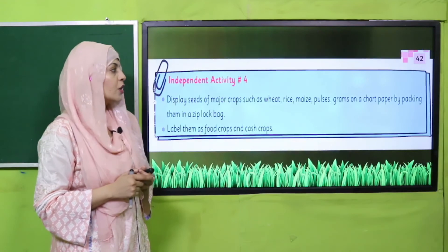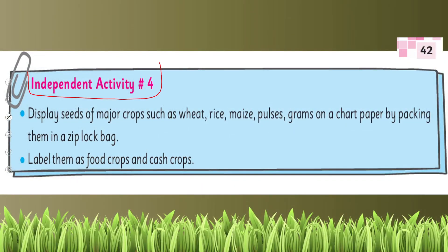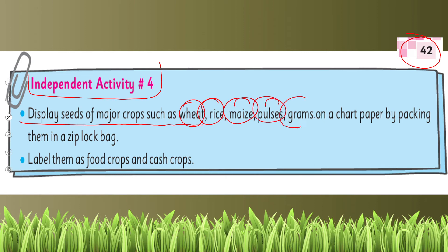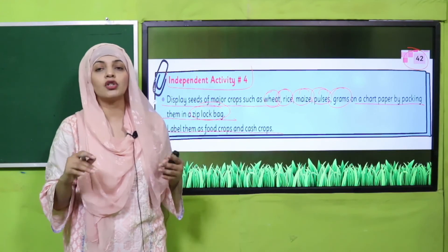So for homework you will do Active Independent Activity number four given on page number 42. Quickly open it. This will be your homework: display seeds of major crops such as wheat, rice, maize, pulses, grams on a chart paper by packing them in a ziploc bag, and label them as food crops and cash crops.